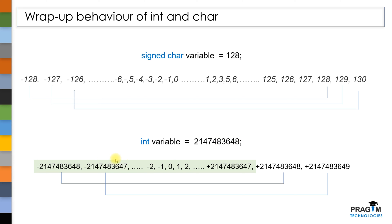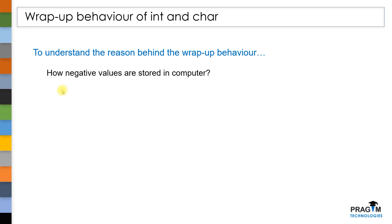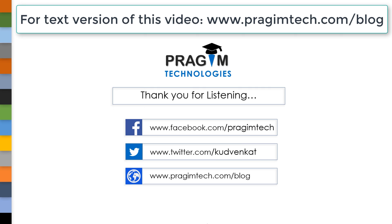There is a strong reason behind this wrap-up behavior. To understand it, you need to know how negative values are stored in a computer. If you understand this concept, you will get a clear picture on both signed and unsigned type modifiers. In our next session, I will explain how negative values are stored in a computer and we will solve some examples on both signed and unsigned type modifiers. That's it for this session. Thank you for listening. See you in the next session.